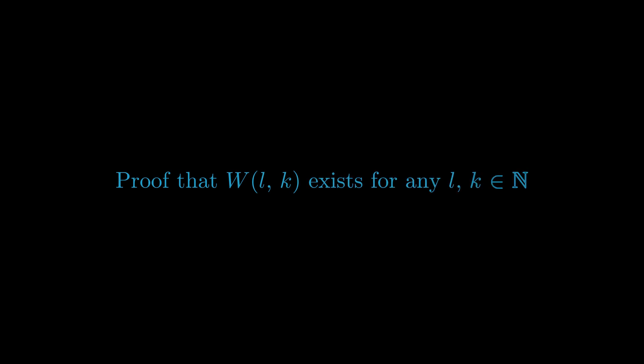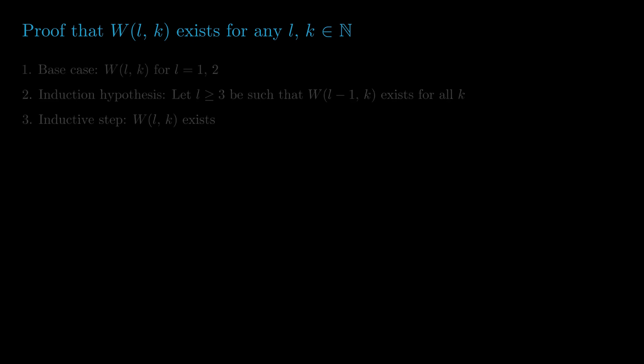Let's prove van der Waerden's theorem. We will do this by proving that W(l, k) exists for all choices of l and k using double induction. Let's start with the base case when l equals 1 or 2. When l equals 1, all we're looking for is a one-term AP.